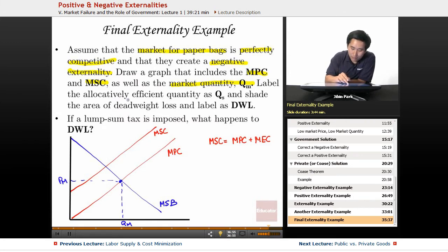Label the allocatively efficient quantity as Qs and shade the area of deadweight loss and label as DWL. The allocatively efficient is where MSC equals MSB - that's allocatively efficient.